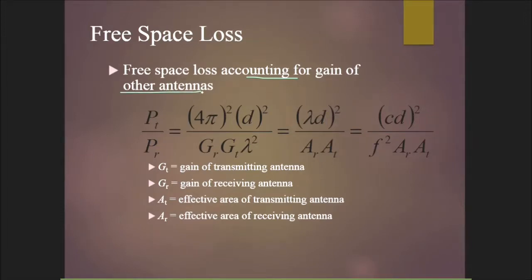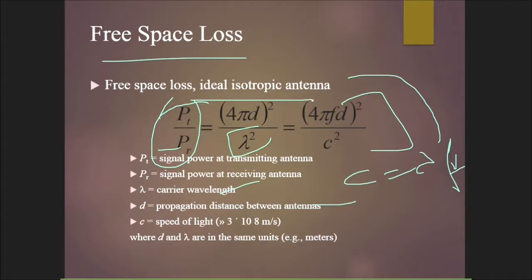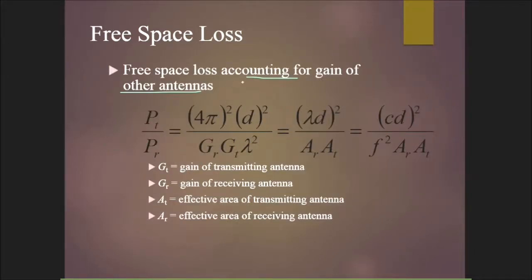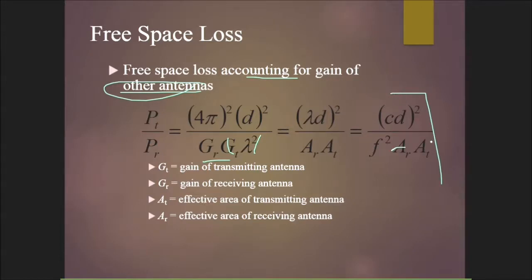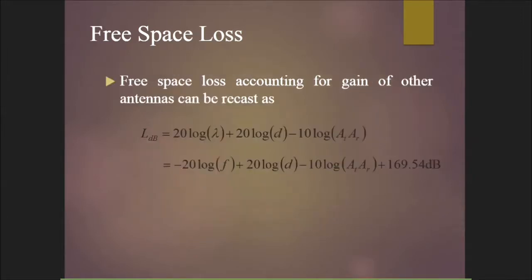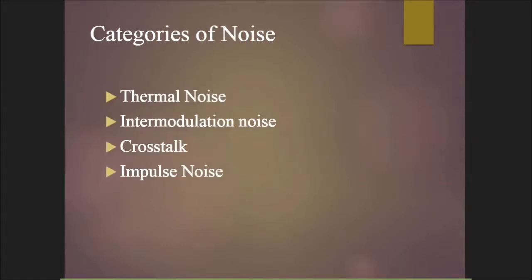Free space loss accounting for antenna gains is given by: Pt/Pr = (4πd)²/(λ²·Gr·Gt), where Gt is the gain of the transmitting antenna and Gr is the gain of the receiving antenna. This can also be expressed using effective areas At and Ar as: Pt/Pr = π²d²/(Ar·At). In dB: −20·log(f) + 20·log(d) − 10·log(At·Ar) + 169.54 dB.